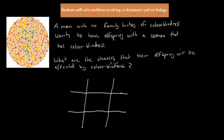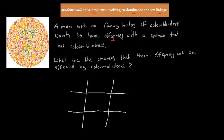The question could be something similar to this: a man with no family history of colour blindness wants to have offspring with a woman that has colour blindness. What are the chances that their offspring will be affected by colour blindness?